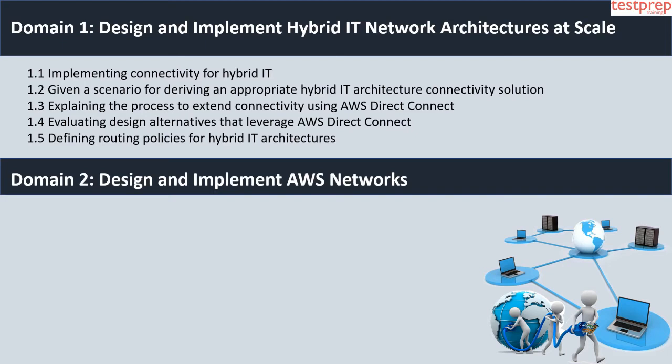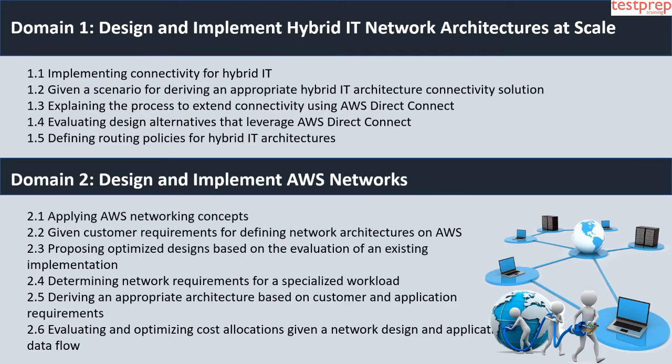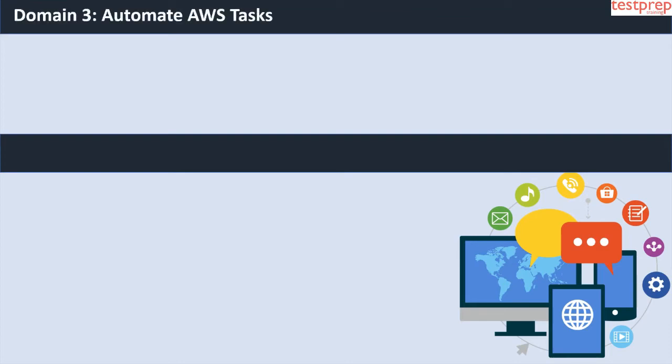Domain 2: Design and Implement AWS Networks — it contains six subtopics: first, applying AWS networking concepts; second, given customer requirements, defining network architectures on AWS; third, proposing optimized designs based on evaluation of an existing implementation; fourth, determining network requirements for a specialized workload; fifth, deriving an appropriate architecture based on customer and application requirements; sixth, evaluating and optimizing cost allocations given a network design and application data flow.